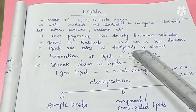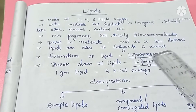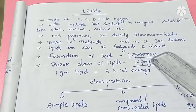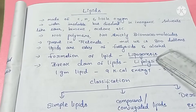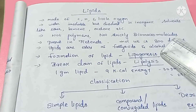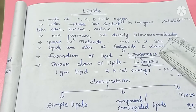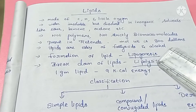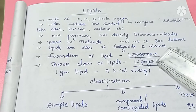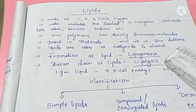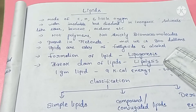Lipids are esters of fatty acids and alcohol. Lipid formation is called lipogenesis — genesis means synthesis, meaning production. And lysis — lipolysis — is the breakdown of lipids; lipolysis means the breakdown process.